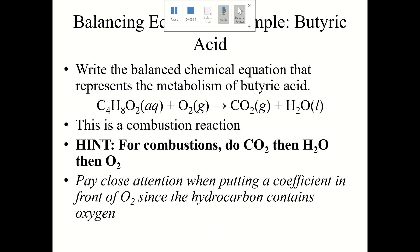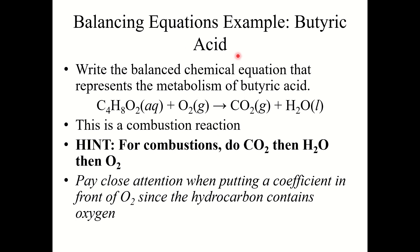Let's look at one more example: butyric acid. Write the balanced chemical equation representing the metabolism of butyric acid. This is something you wouldn't be expected to know by name, so you'd be given the reaction: C4H8O2 plus O2 forms CO2 and H2O. Notice the theme with combustion reactions — they all involve oxygen gas, carbon dioxide, and H2O. With combustion reactions, I recommend starting with the compounds on the right side first, then coming back to O2 last.